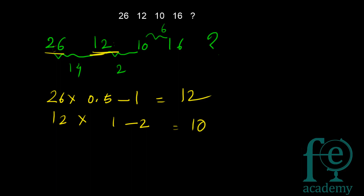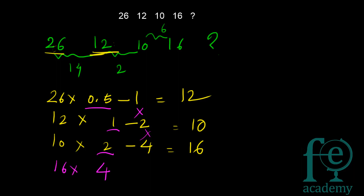Then 10 × 2 − 4 = 20 − 4 = 16 ✓. So the pattern is: each term = previous term × k − m. The multiplicands 0.5, 1, 2, 4 are doubling each step, and the subtracted values 1, 2, 4, 8 are also doubling. The next multiplicand is 4 × 2 = 8, and the next subtracted value is 4 × 2 = 8. So the answer is 16 × 4 − 8 = 64 − 8 = 56.